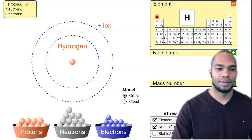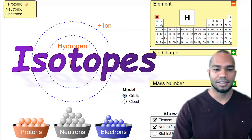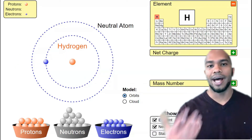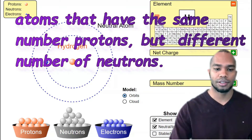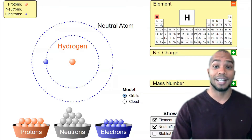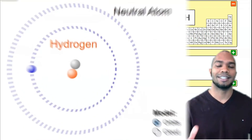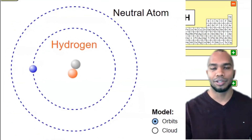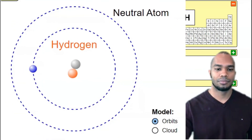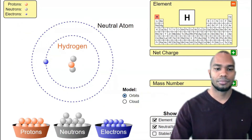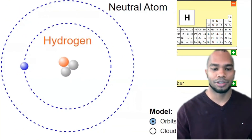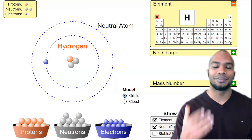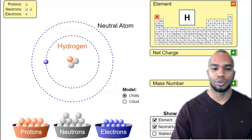We also learned that there are these things called isotopes. Isotopes are atoms that have the same number of protons but a different number of neutrons. For instance, this is hydrogen. This is an isotope of hydrogen. This is another isotope of hydrogen. Notice the difference — it has a different number of neutrons.